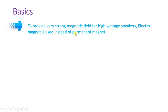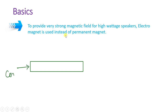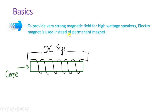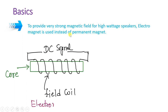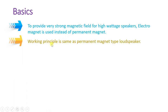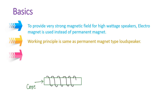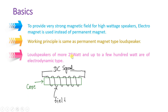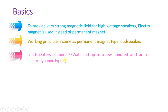By using an electromagnet we can have a higher power handling capacity, so we use an electromagnet instead of a permanent magnet in the Electrodynamic Loudspeaker. The working principle is the same as the permanent magnet loudspeaker, but the key difference is the electromagnet. Loudspeakers of more than 25 watts up to a few hundreds of watts are possible with the electrodynamic type.